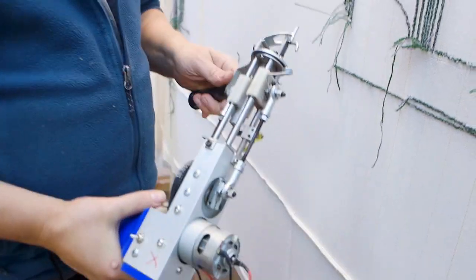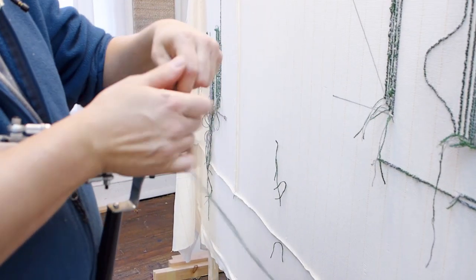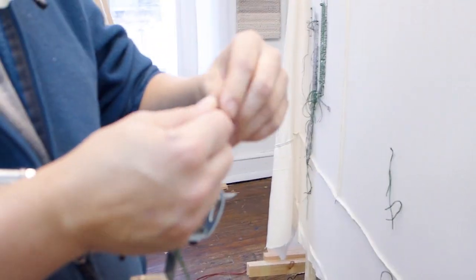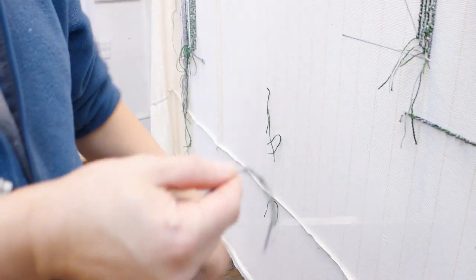Okay, so now we're going to switch to the loop tufting machine. Same kind of situation, we need a consistently feeding thing of yarn. It's good to have a pair of scissors handy.